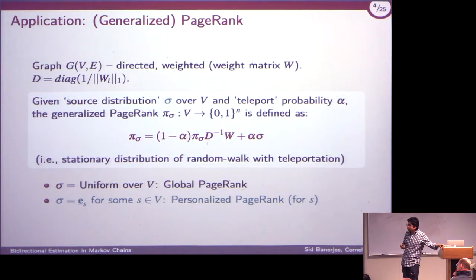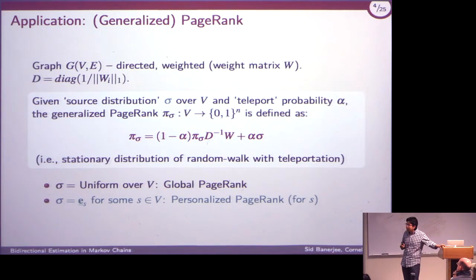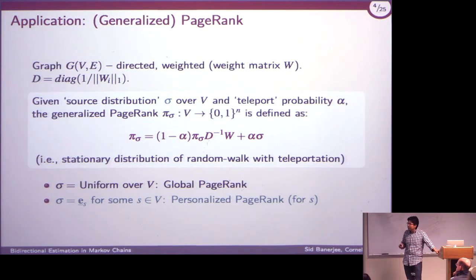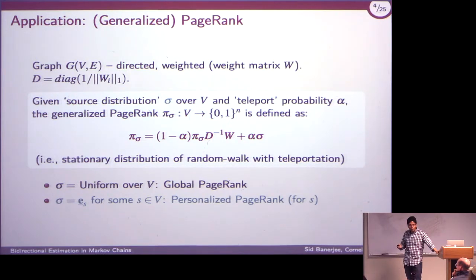Here's the application we started from. The reason probability estimation in large Markov chains has become very important is that around the late 90s, some people came up with the idea of PageRank. John Kleinberg came up with HITS, and then Page and Brin came up with PageRank, which Google implemented, and now we're dependent on PageRank for everything we do.